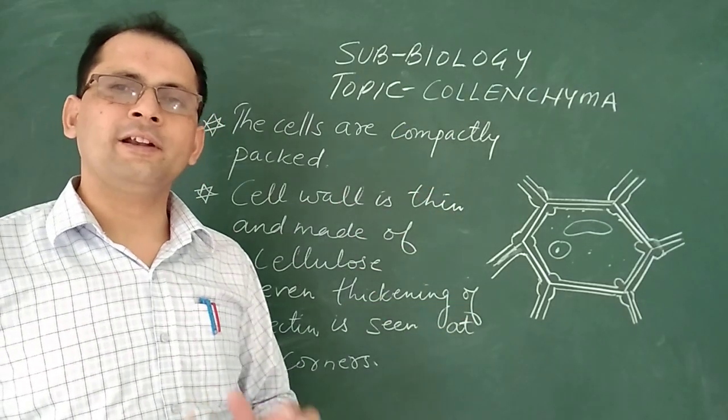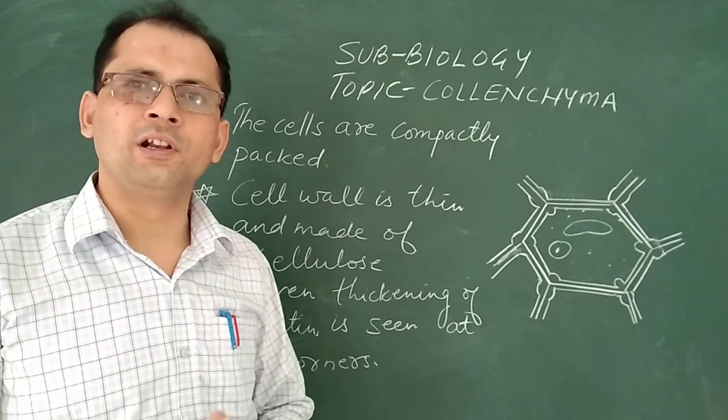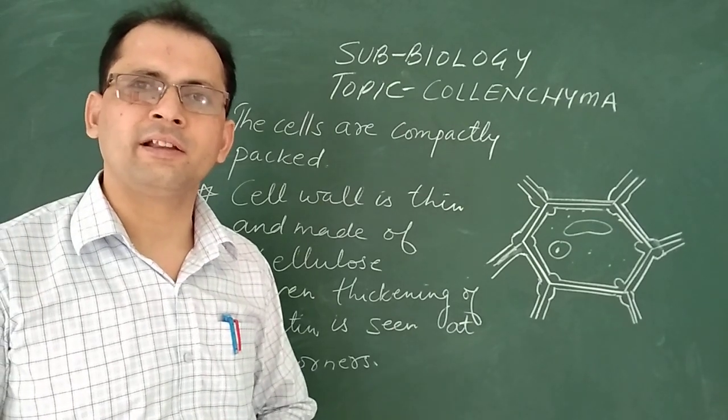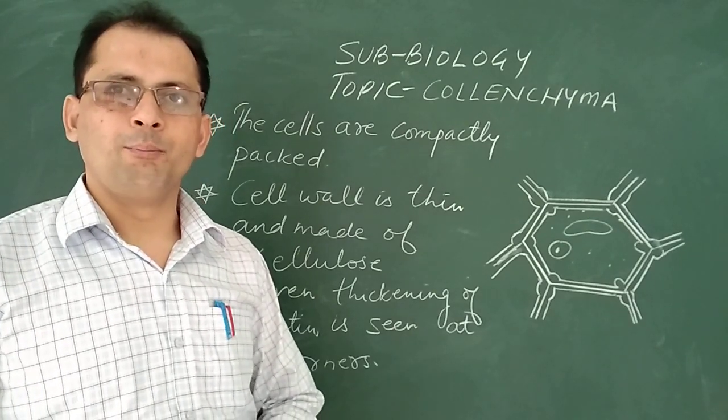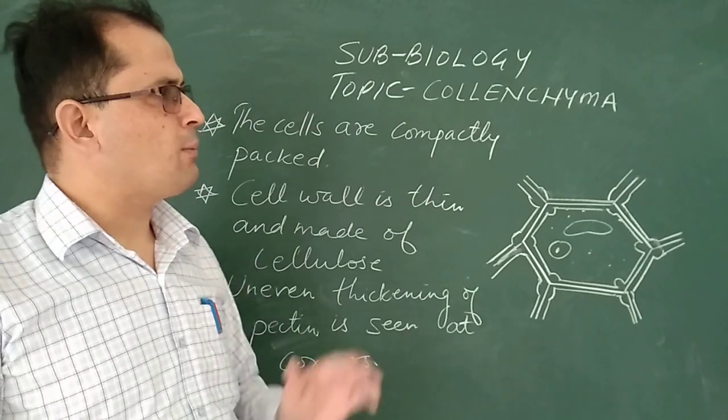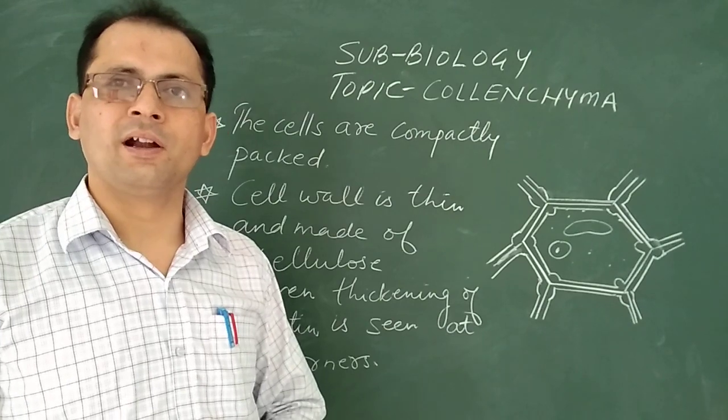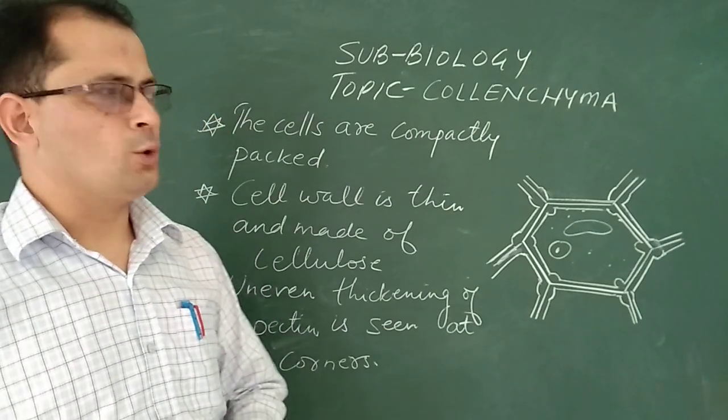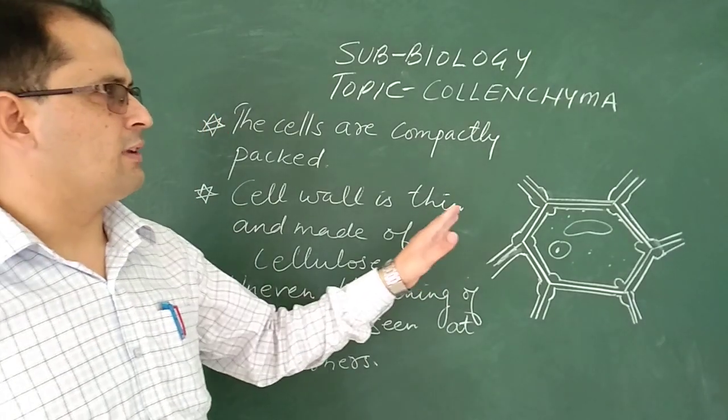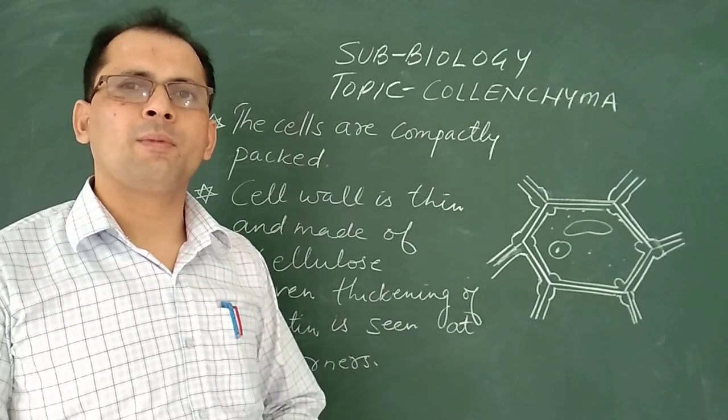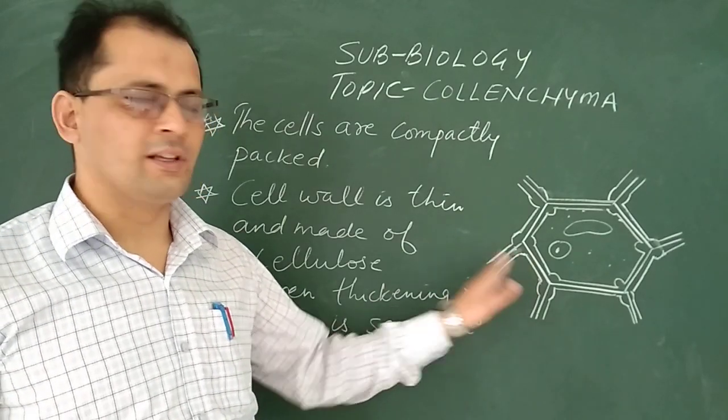So this collenchyma is a soft living tissue which is present in the plant. Basically, this collenchyma is responsible for the flexibility in the plants. Now you can see when we observe the cell of collenchyma it looks like this.